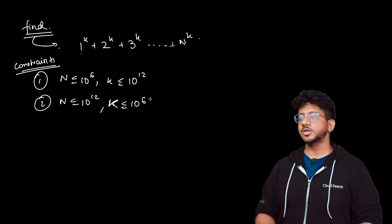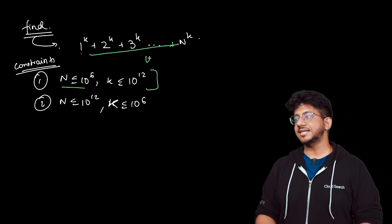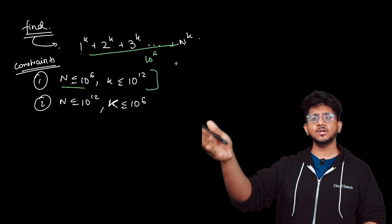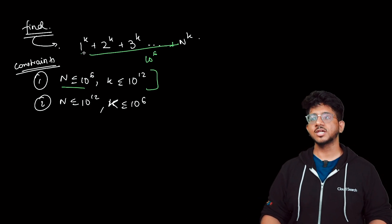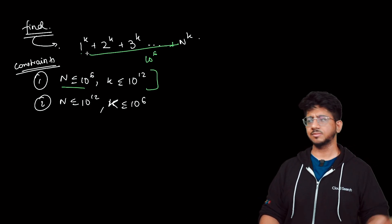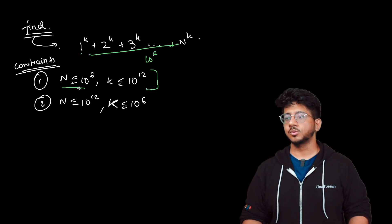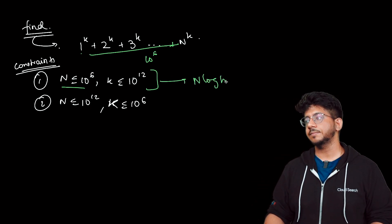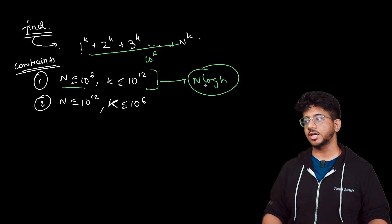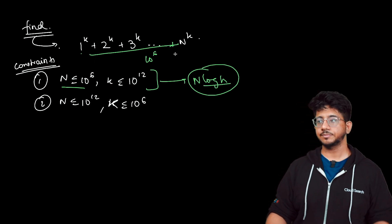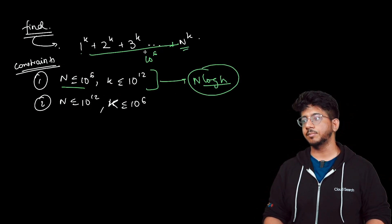For the first case, n is small — there are exactly up to 10⁶ terms. Just evaluate them: loop over the values, use binary exponentiation to find i^k in O(log k). So you can find the answer in O(n log k) — for every term you do i^k using binary exponentiation in log k, do that for n terms and add it up. This is very simple to solve when the number of terms is small.